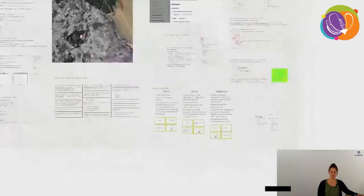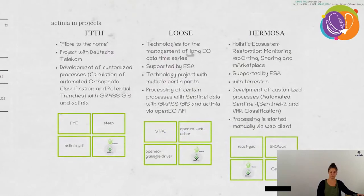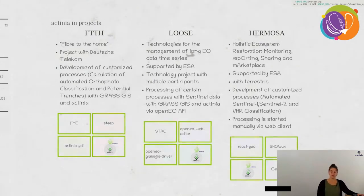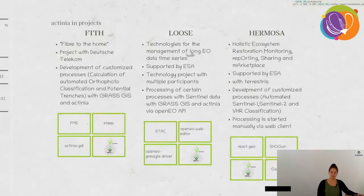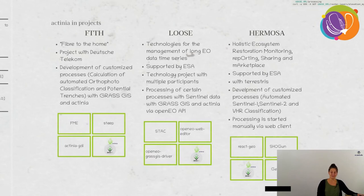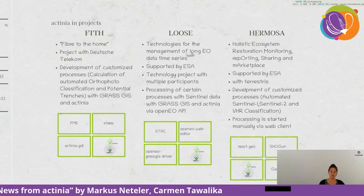Now an overview of Actinia usage in projects. I picked three very different examples. The first is FTTH — Fiber to the Home — by Deutsche Telekom, where we develop customized processes such as calculating potential trenches to see where fiber might be dug. In this workflow, FME is started, then it informs STEEP, which starts a VM and informs Actinia GDI — still alive in this project — which adds process status to a database and then reaches Actinia core on the VM to do the real processing.